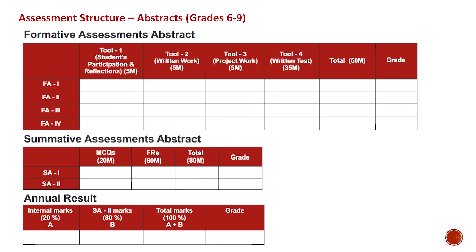Assessment structure for Grades 6 to 9 — formative assessment: FA-1, FA-2, FA-3, and FA-4. Tool 1 is student participation and reflection, 5 marks — create a problem and write the solution. Tool 2 is written work, 5 marks — written notes and homework. Tool 3 is project work. Tool 4 is a written test, 35 marks. Total: 50 marks.